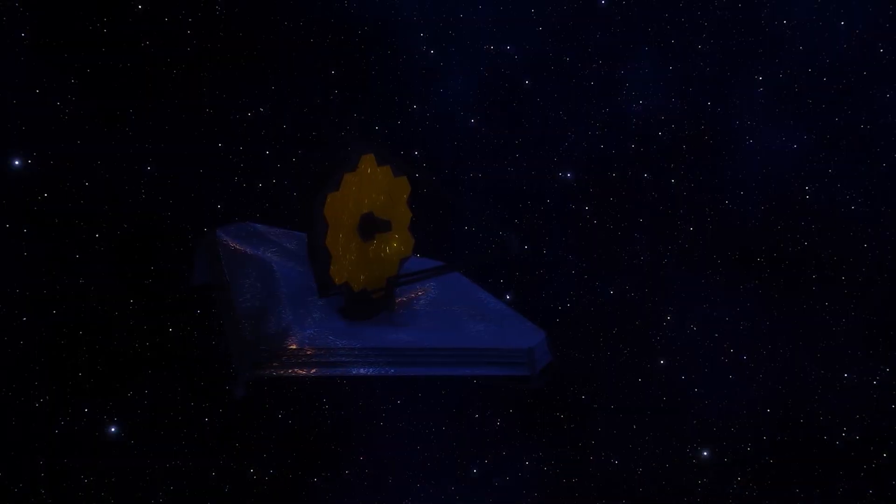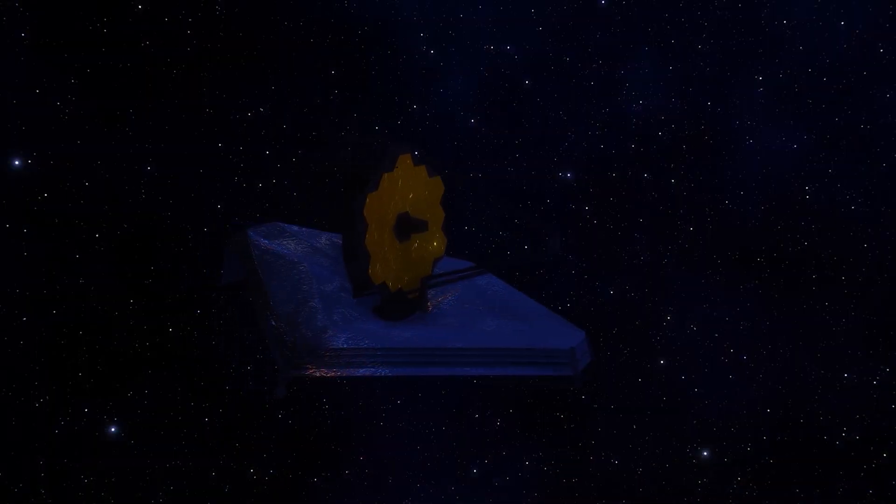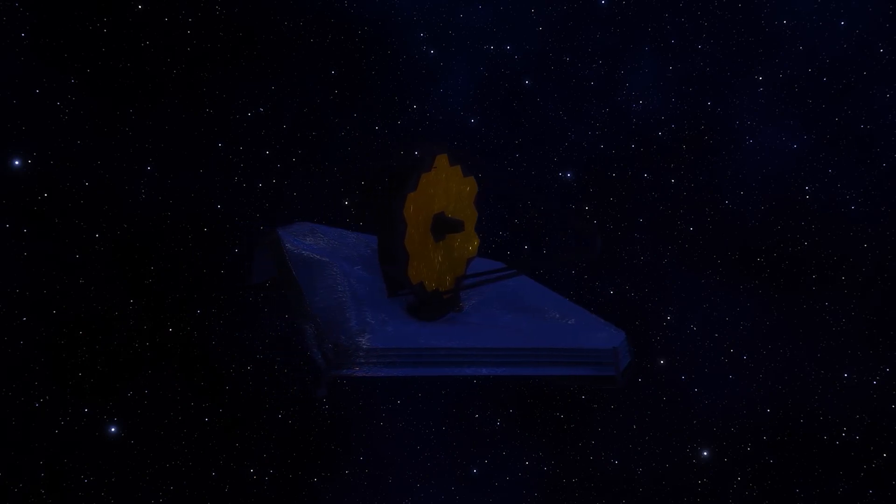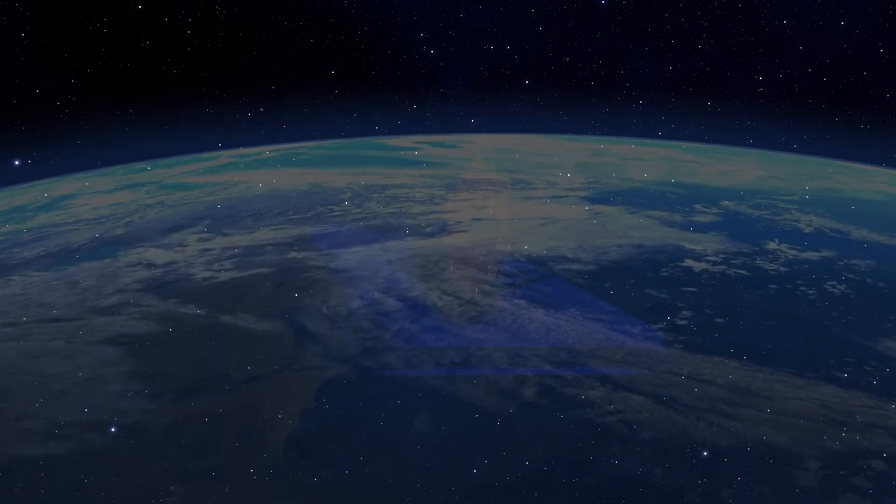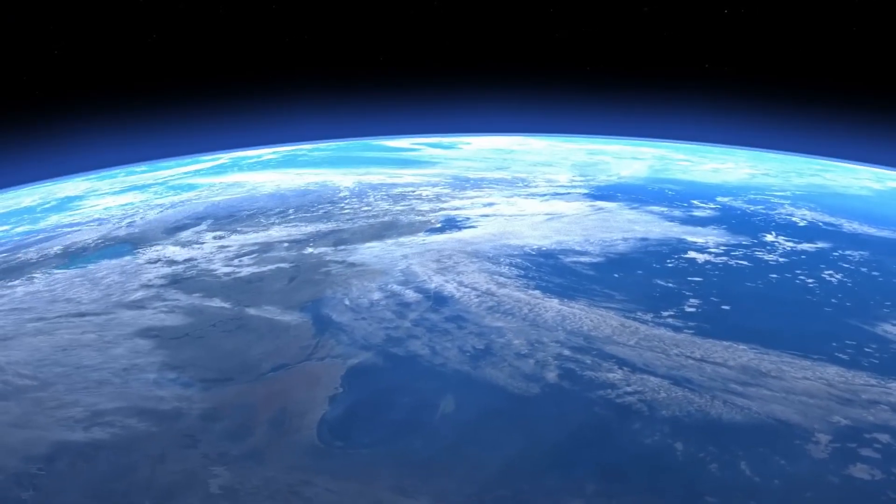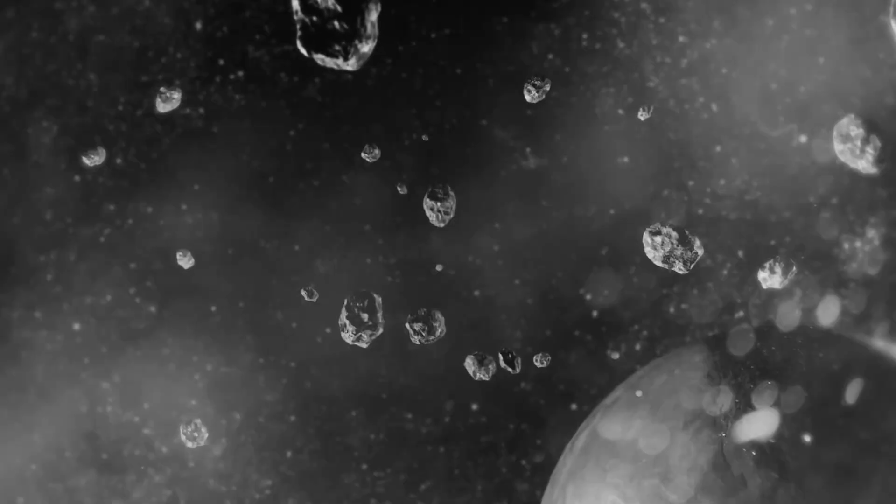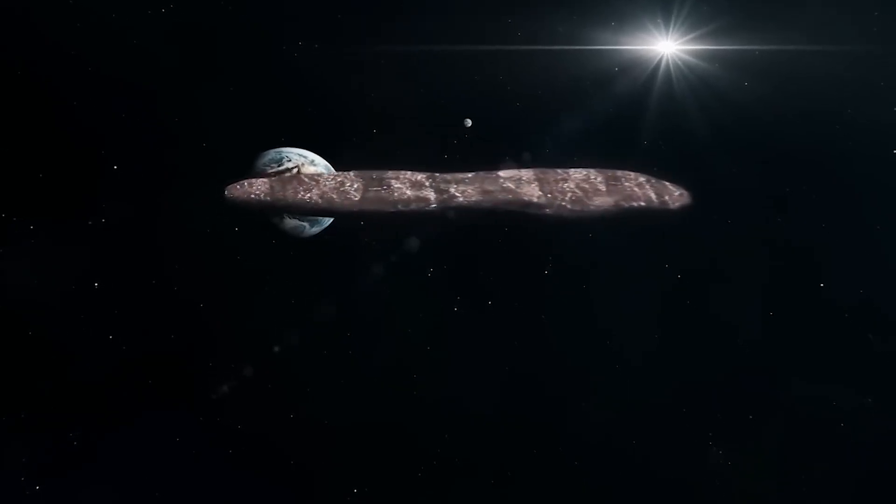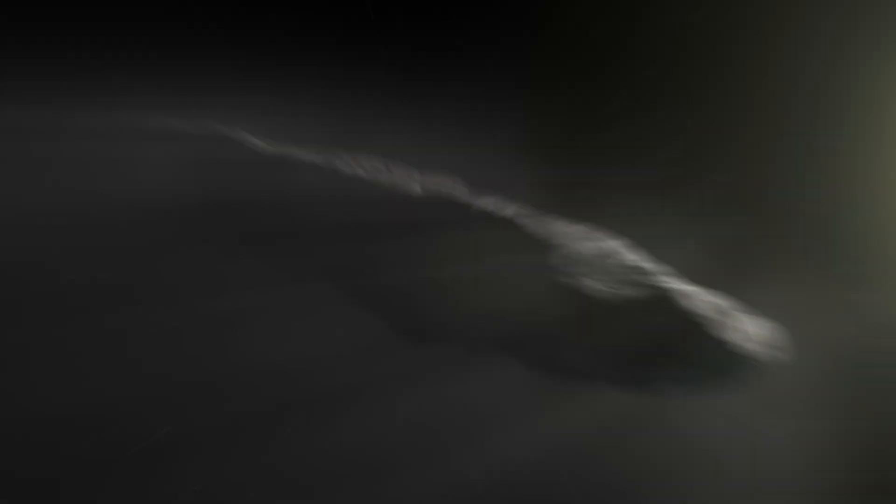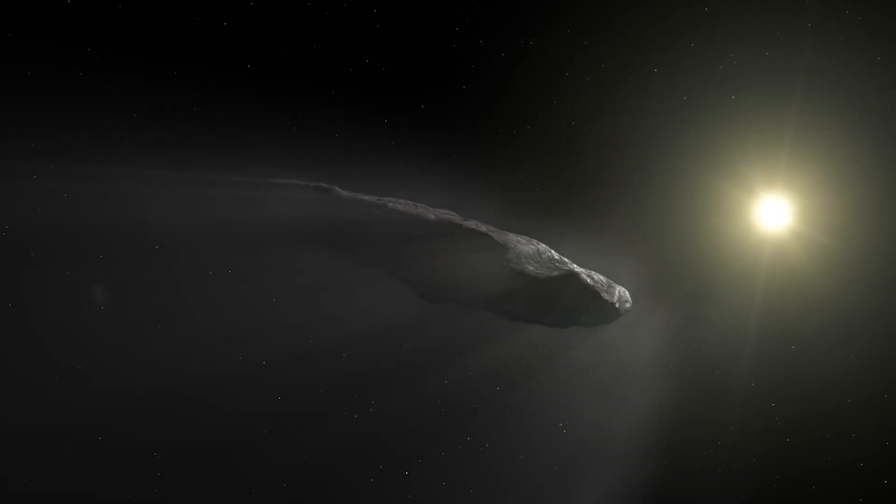Since their launch, these telescopes have revealed numerous findings in space, including the capture of images of large objects in space and the detection of a visitor coming from a considerable distance. This visitor, known as Oumuamua, is an object of interesting and peculiar origin that passes through our solar system.